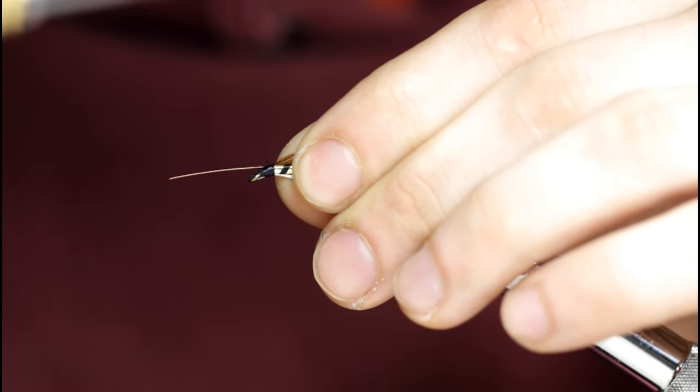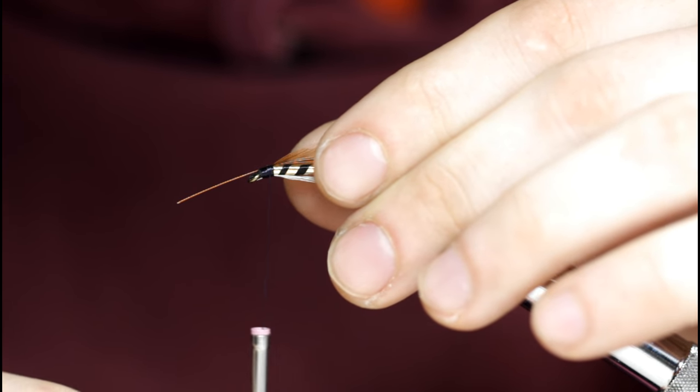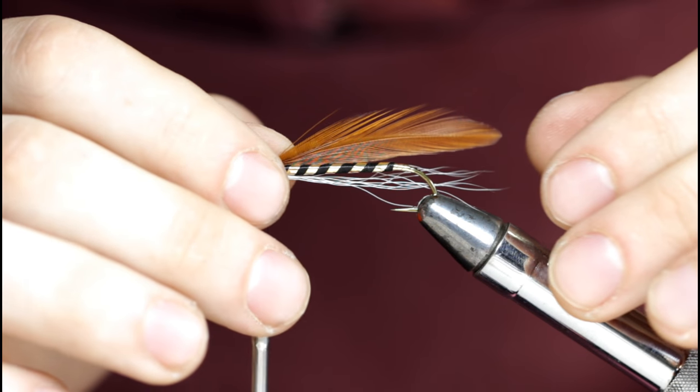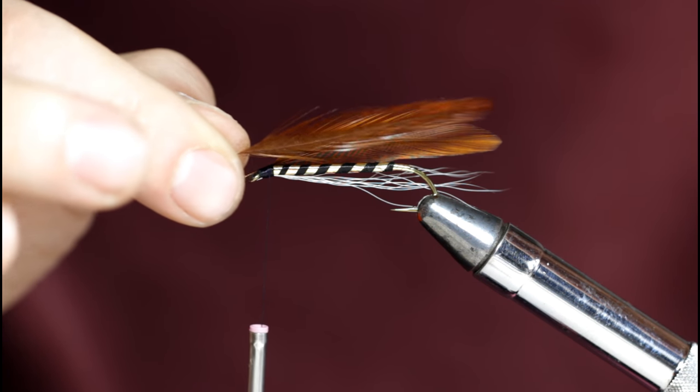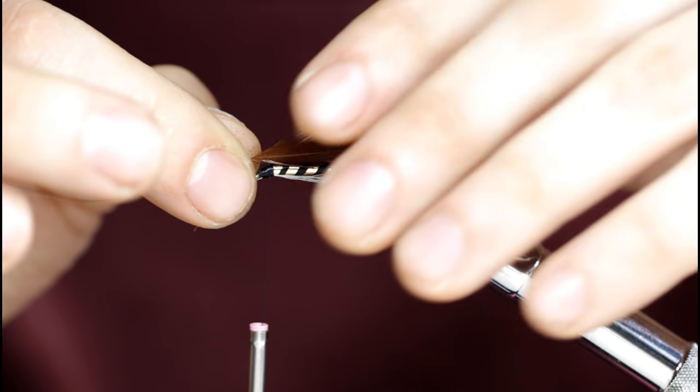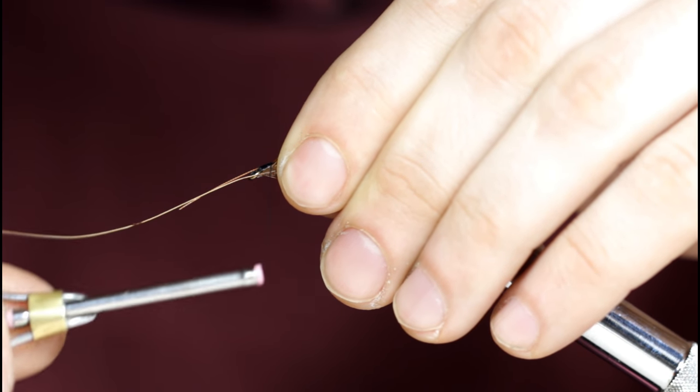I'm just going to set this feather on the side here, take a few loose turns down towards the hook eye, and bring my thread back to the rear of the head here. I'll come in with my second feather for the opposite side.